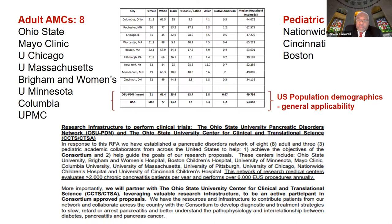They also ensured the research would be applicable to the general U.S. population by selecting medical centers across Columbus, Rochester, Chicago, Austin, Pittsburgh, Minneapolis, and Cincinnati — summarizing gender distribution, ethnic distribution, and household incomes across sites to approximate U.S. population demographics. This was part of the goals set to ensure findings could leave the academic medical centers and be applied to the general population.